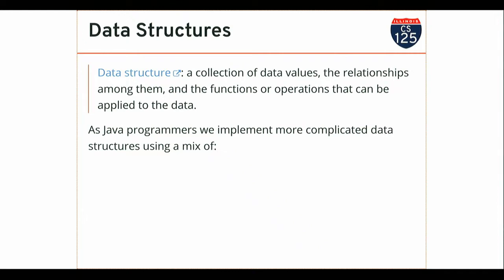Today we're going to introduce you to the idea of a list. A list is a generalization of an array — it's a great starting point because it's fairly simple and similar to arrays you're already familiar with. We can talk about two different ways to implement a list and the trade-offs between them. We'll use Java interfaces to represent what it means for an object to be a list, and then talk about two different ways to implement the same interface that look equivalent to the user but are quite different under the hood.